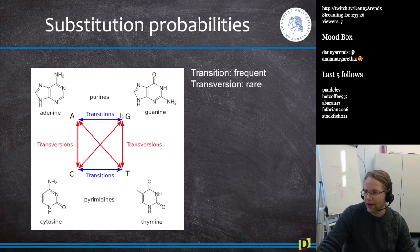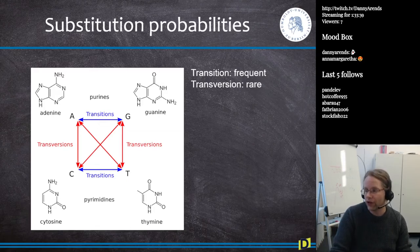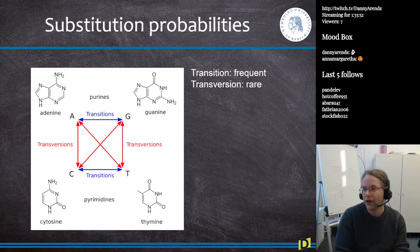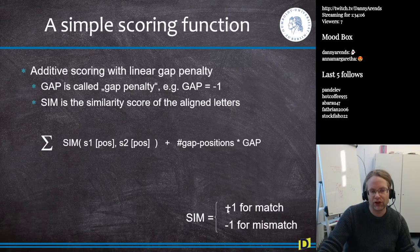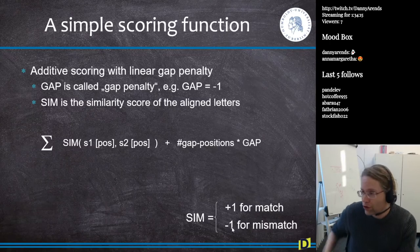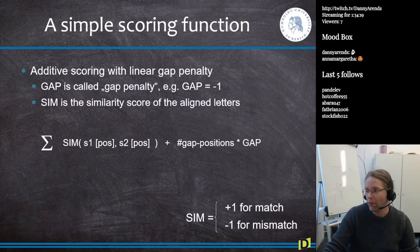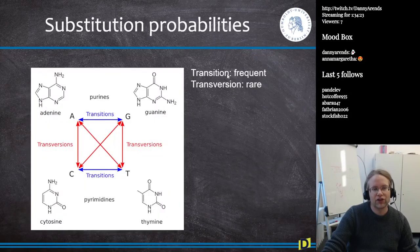Chemically speaking, purines — adenine and guanine — are much closer together, so it's chemically much easier to change a guanine into an adenine than into a thymine. So for mismatches we also have to consider the substitution probability — the probability of an A turning into a G is higher than an A being transformed into a T. The original +1/-1 scoring should be adapted: sometimes score -0.5, other times -2, because transitions are frequent and transversions are very rare.